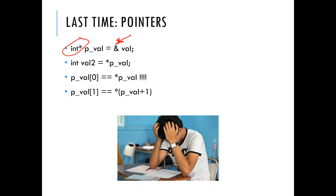We can also dereference a pointer by putting a star in front of it. I find that syntax confusing, but once you've done enough of these it starts making sense. It says: that's a pointer — go to where that pointer is pointing and look at what's inside. That's what the asterisk is doing.